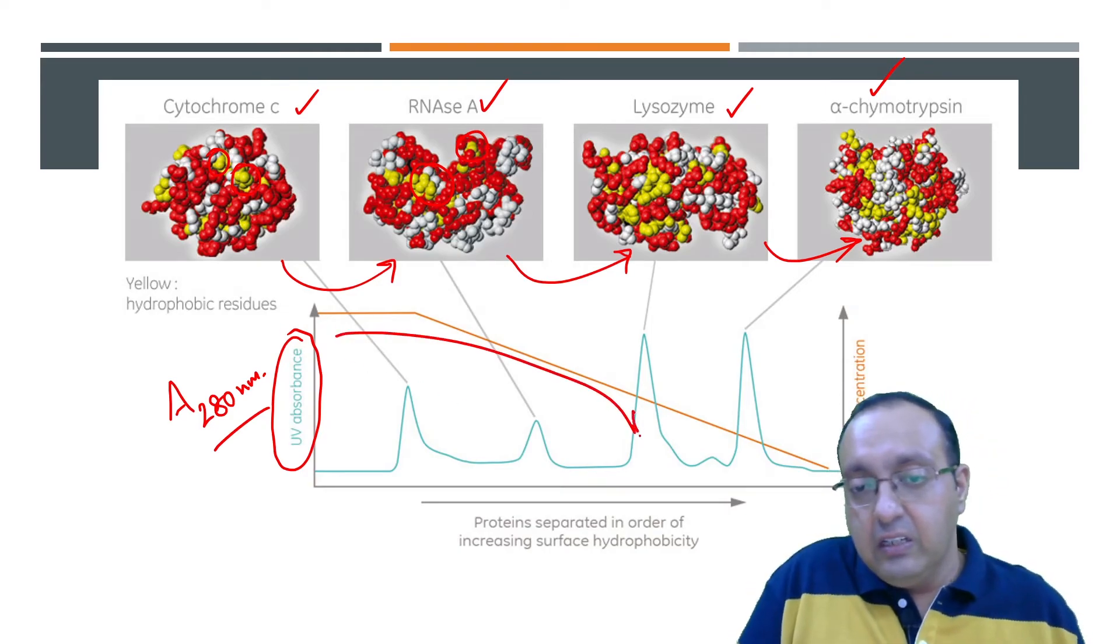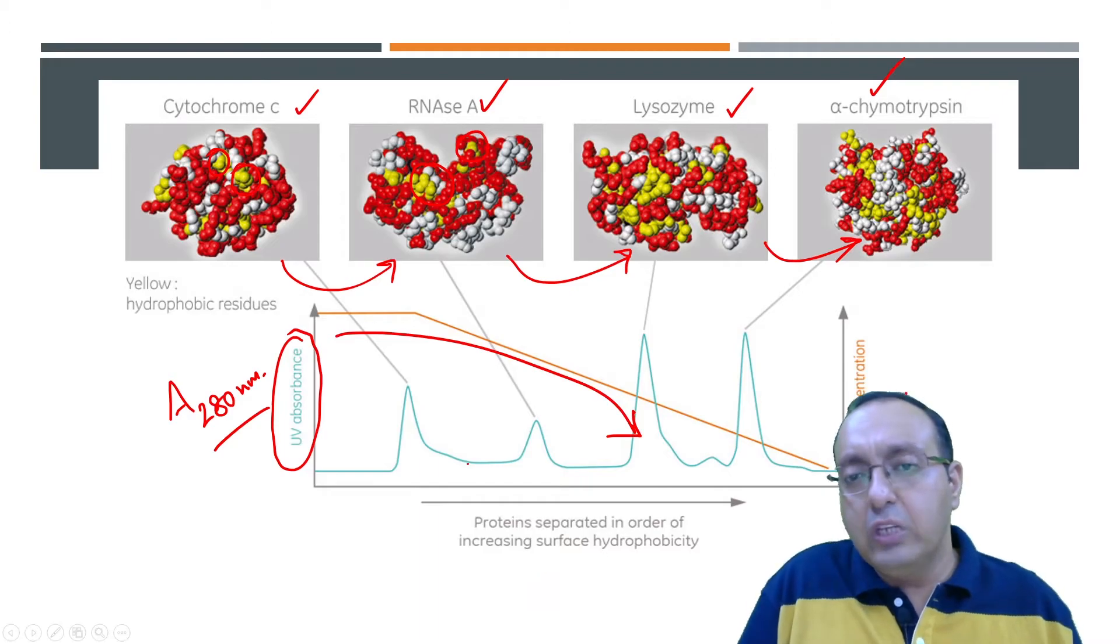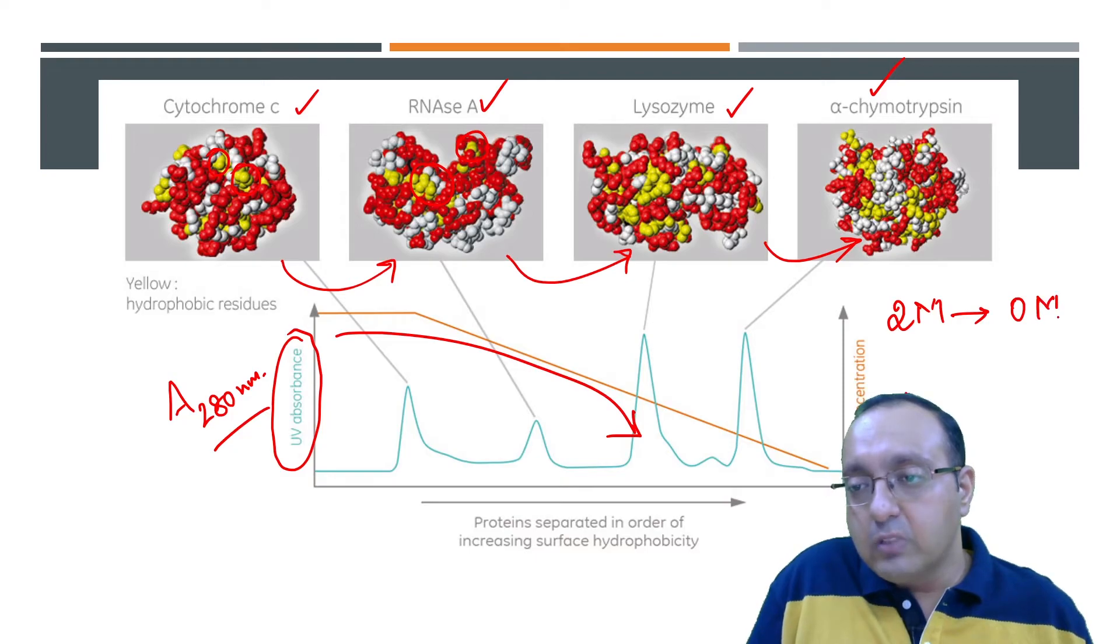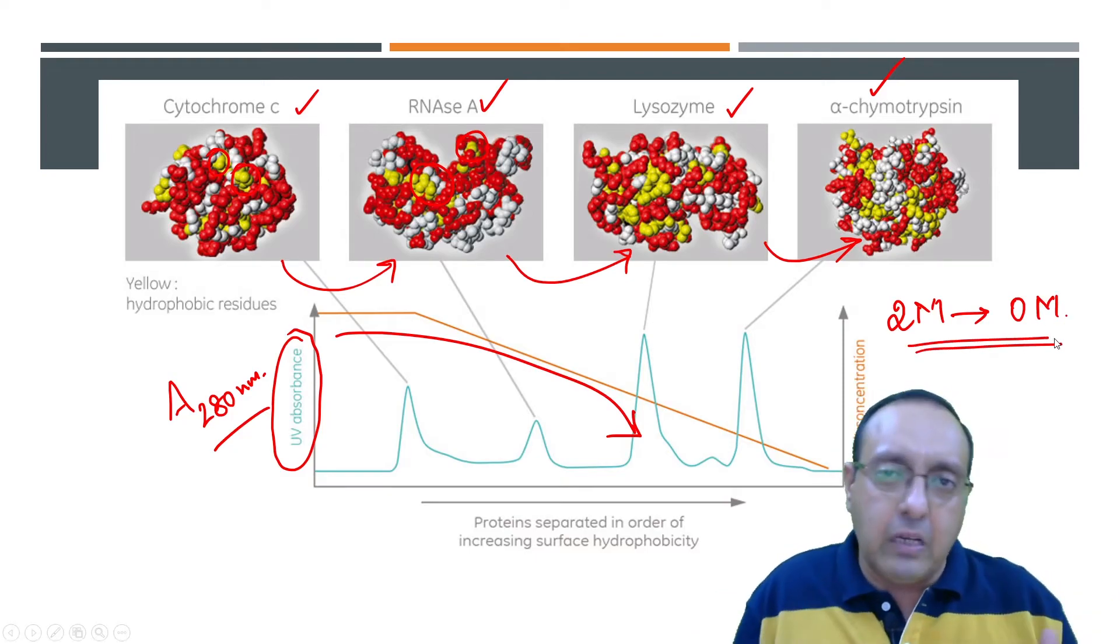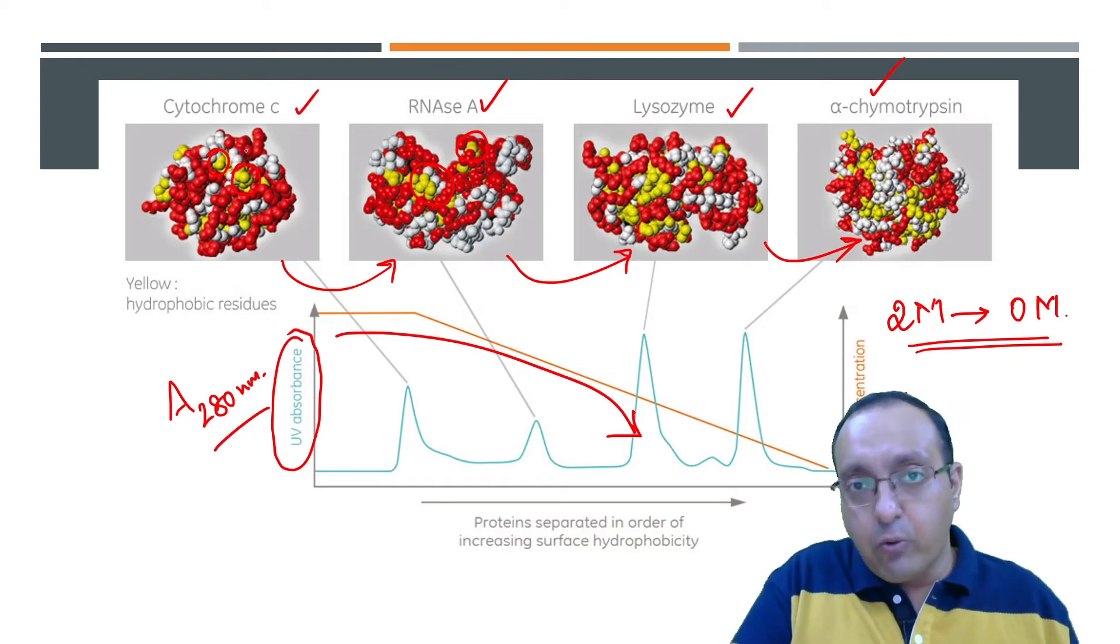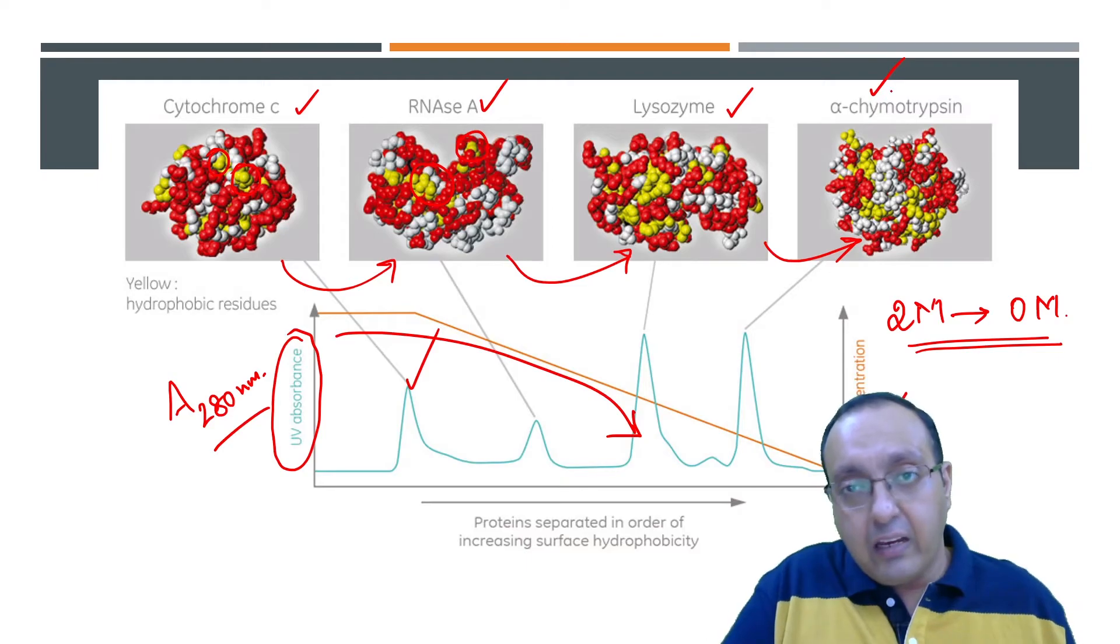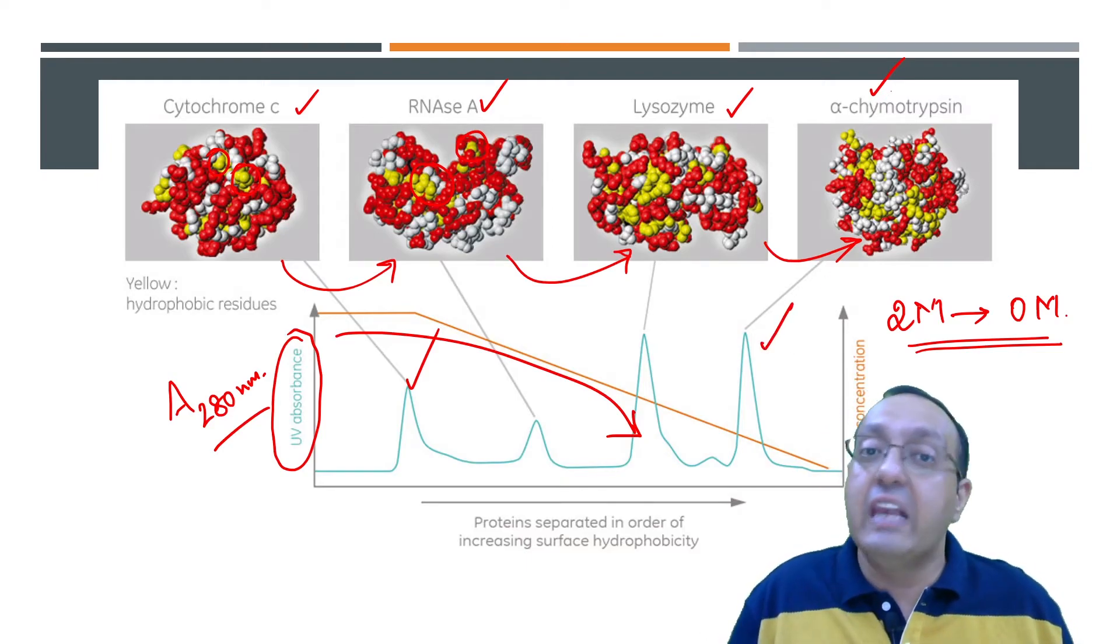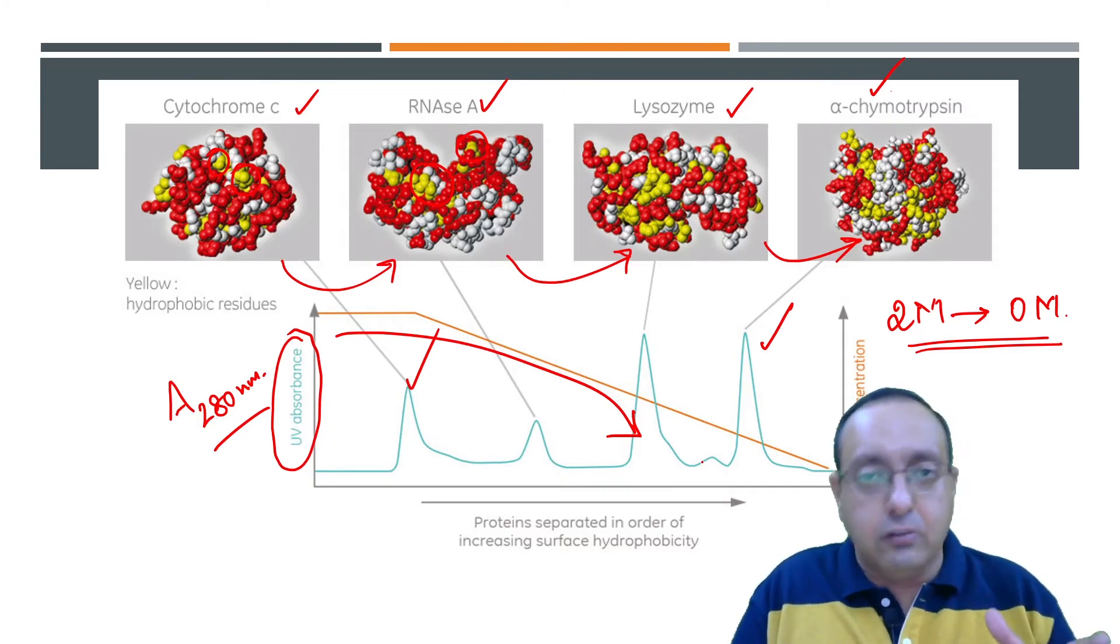And when we decrease the salt concentration, so here you can see the decreasing salt concentration. Usually we go from two molar to zero molar ammonium sulfate. This is the common typical procedure. And you can see that the least hydrophobic protein like cytochrome C elutes first and the most hydrophobic protein like alpha chymotrypsin elutes the last. That is the order of elution from the proteins. And you can see it's a pretty crude resolution, although it is an idealized figure, but the separation is pretty good.